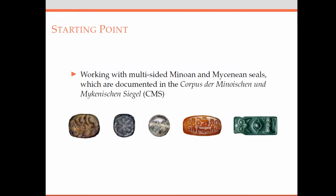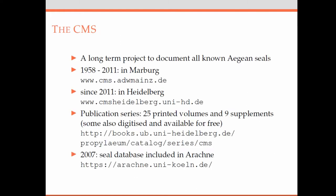The idea for this project came to me during my work with multi-sided Minoan and Mycenaean seals, which are documented in the Corpus of Minoan and Mycenaean Seals. It's a long-term project started in 1958 in Marburg, which moved to Heidelberg in 2011. The most important output is a publication series consisting of 25 printed volumes, where each seal is documented, plus nine supplementary volumes.